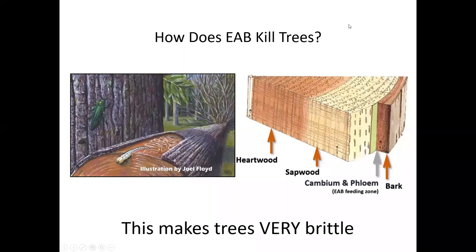It's basically that circulatory system that helps trees survive. If the emerald ash borer is consuming this material, think of it this way: if you had something poking holes throughout all of your arteries and veins, you're not going to be able to live very easily, if at all. And in the case of these trees, that's exactly what they're looking at — they are not able to survive this experience.